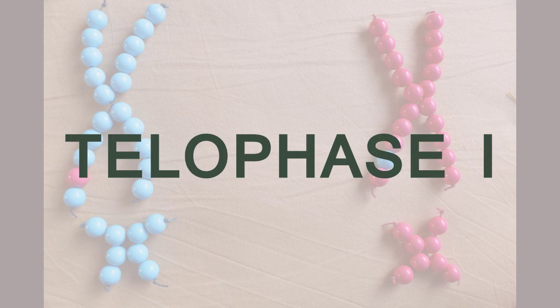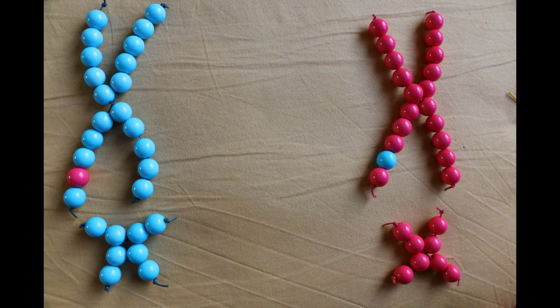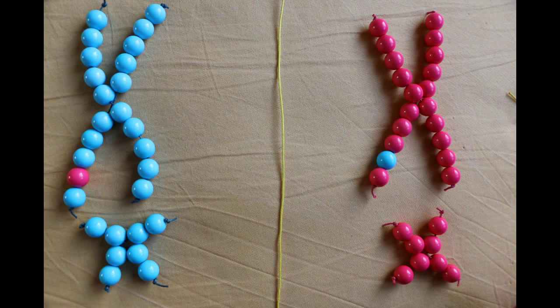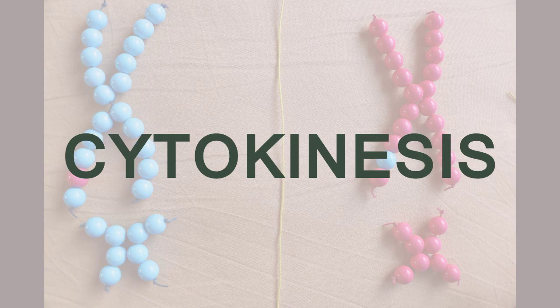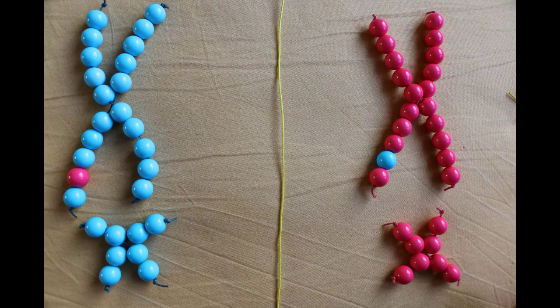In the final stage of the first round, telophase one, the nuclear membrane around each end of the cell reforms. The nuclei then move away from one another, causing the cell to split into two new cells — that process is called cytokinesis. Finally done with meiosis one, but look — we already have two new cells! Isn't that amazing?